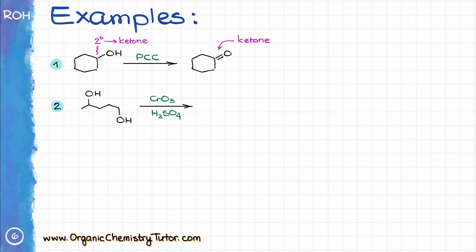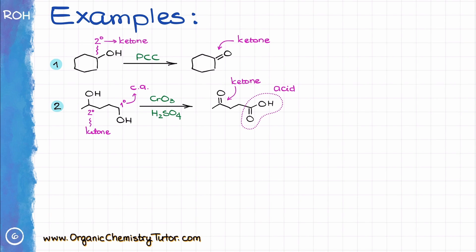In the next example, the starting material has two alcohol groups. Common oxidation reactions oxidize all they can reach — so both alcohols are oxidized. The primary alcohol is turned into the corresponding carboxylic acid, and the secondary alcohol ends up as a ketone. Pay close attention to how you draw these molecules: the carbon bearing the OH group becomes the carbon of the carboxylic acid. Don't accidentally add an extra carbon when drawing the carboxylic acid — this is an extremely common mistake.